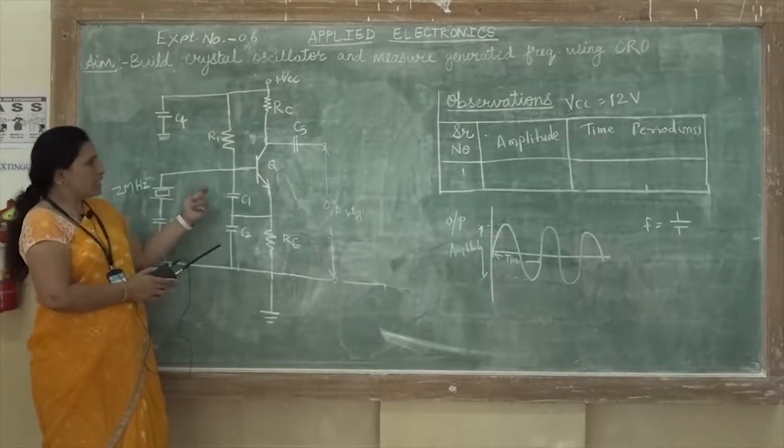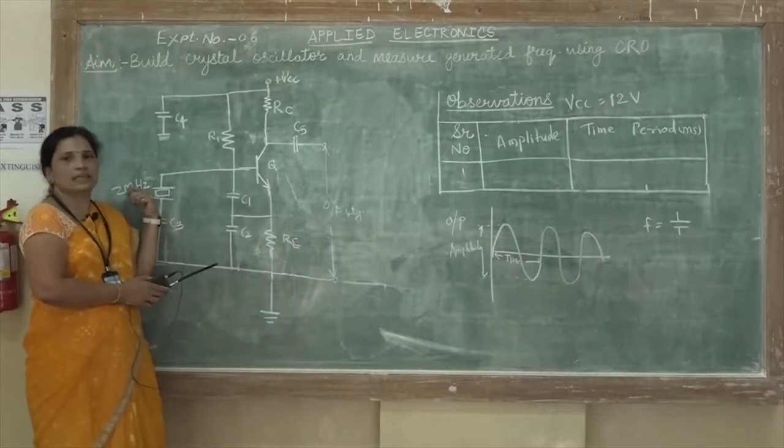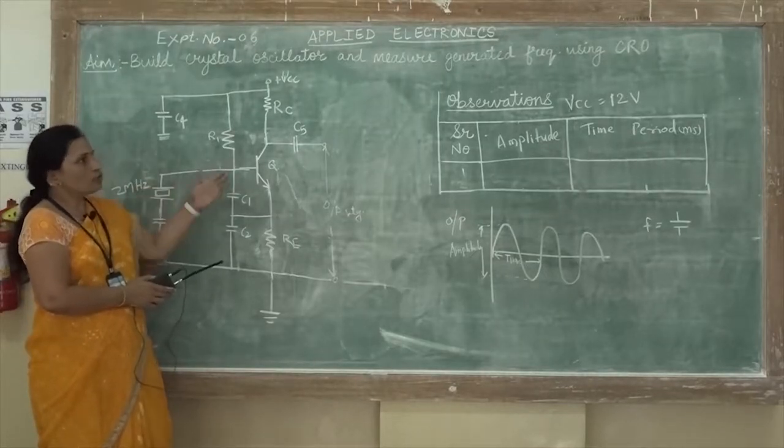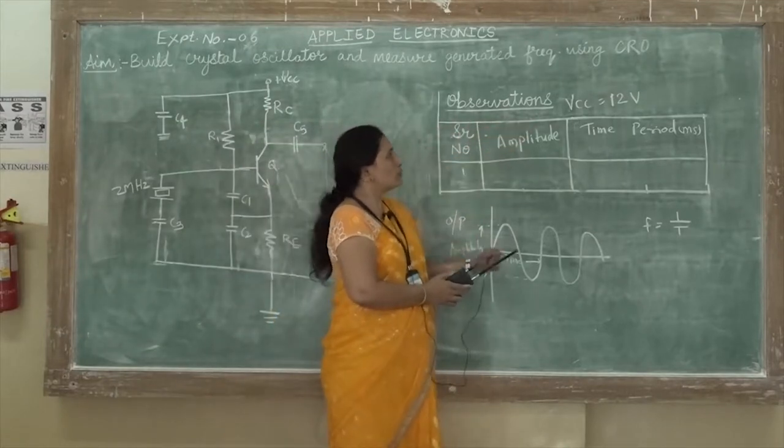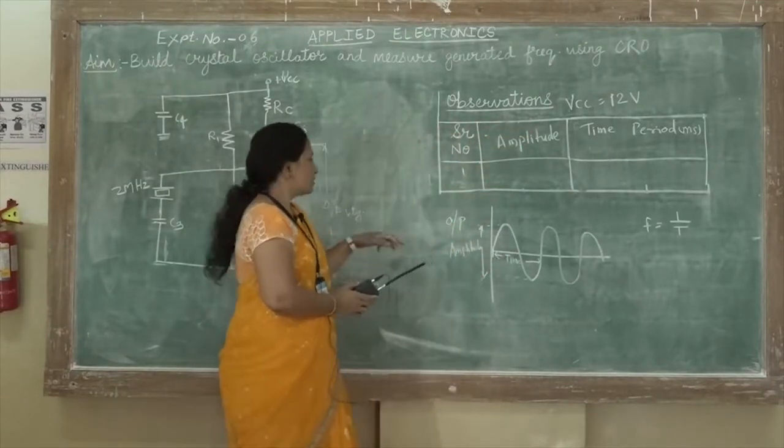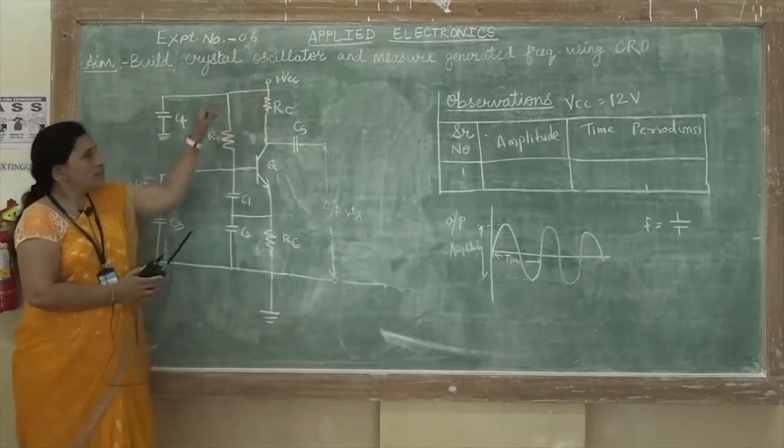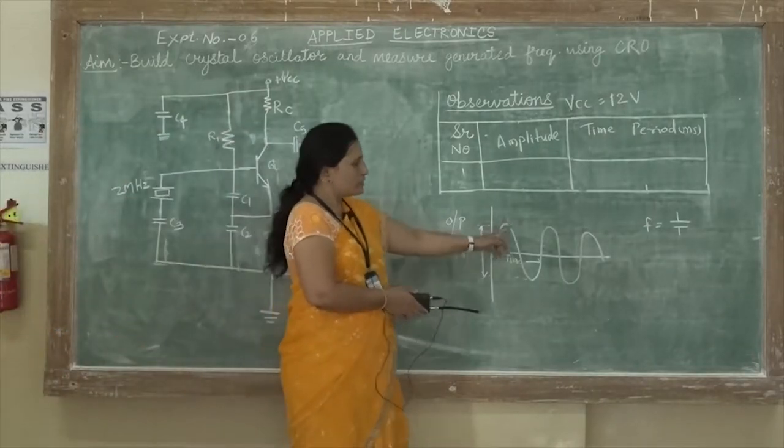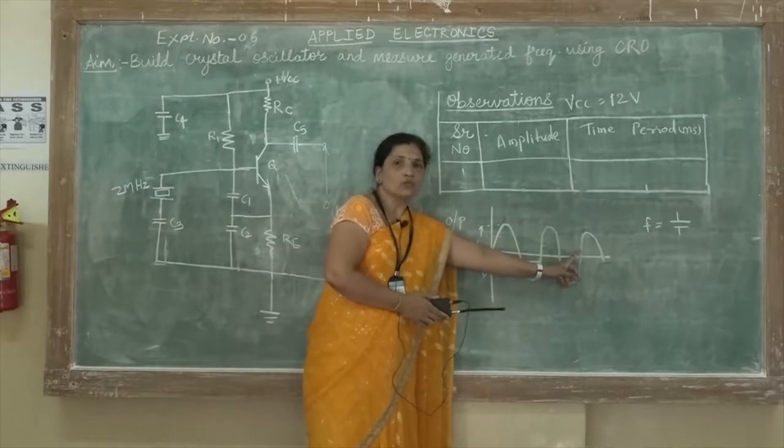After that it has to generate the frequency which should be exactly equal to the frequency of the crystal. You have to keep VCC equal to 12V and just by applying the VCC at the output side you are getting the AC wave or the sine wave at the output side.